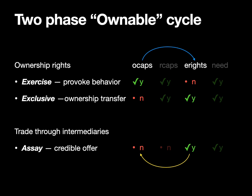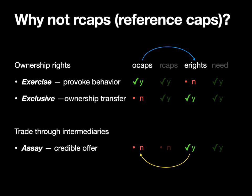We applied this two-phase cycle to go back and forth between O-caps — which is our approach to exercise — and E-rights — which is our approach to exclusive rights transfer and assay. We're skipping the RCAPs column, and since that's a central concern of IWACA, it's worth explaining why we chose not to start from the reference capability approach. To understand that, you need to understand our overall distributed systems framework.